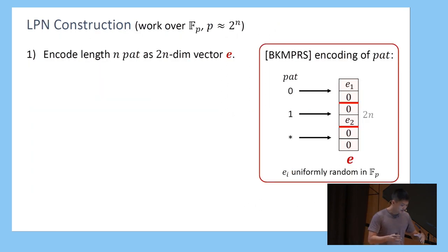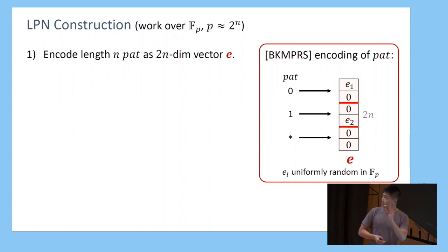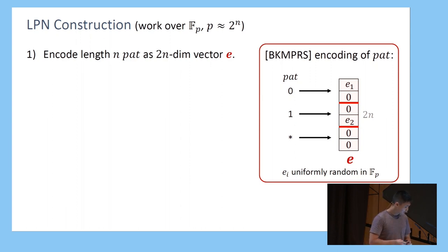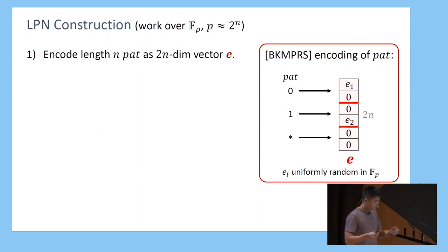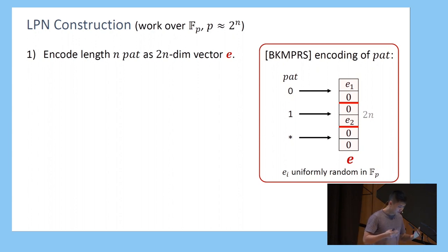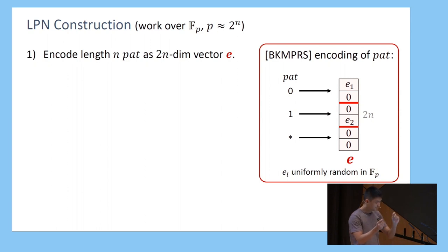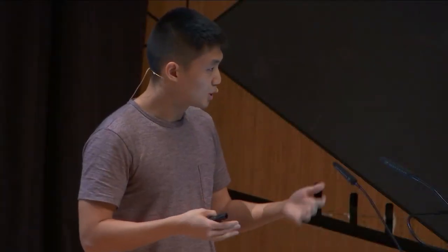For today, we're just going to talk about the LPN-based construction. Just for the talk, to make things a little simpler, I'm going to actually work over F_p, where p is some large prime exponential in the pattern length n. The way the construction works is that I'm going to have some length-n pattern consisting of 0s, 1s, and wildcards, and encode it as this 2n-dimensional vector E with entries over F_p.